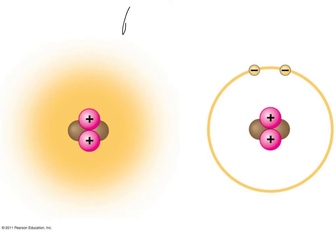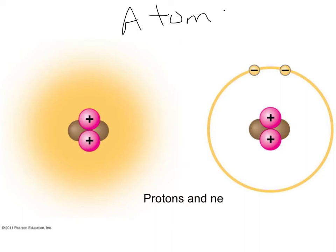An atom is our smallest unit of matter that still retains its properties. Atoms are made up of subatomic particles: protons, neutrons, and electrons. Protons and neutrons are found inside the nucleus of the atom, while electrons are found on the outside, floating in the electron cloud.